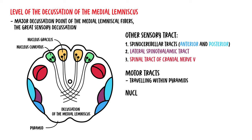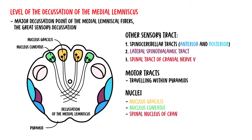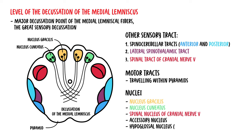There are nuclei at this level which include the nucleus gracilis and nucleus cuneatus. There is also a continuation of the spinal nucleus for cranial nerve five, the accessory nucleus, and the hypoglossal nucleus, which carries cranial nerve number 12.